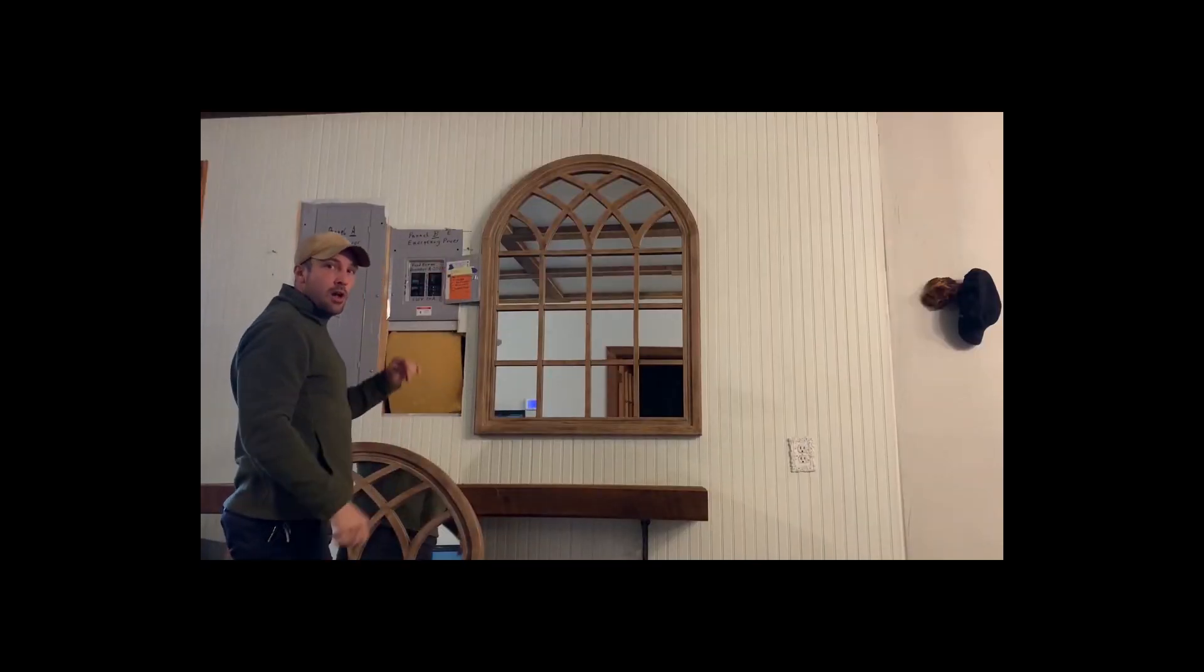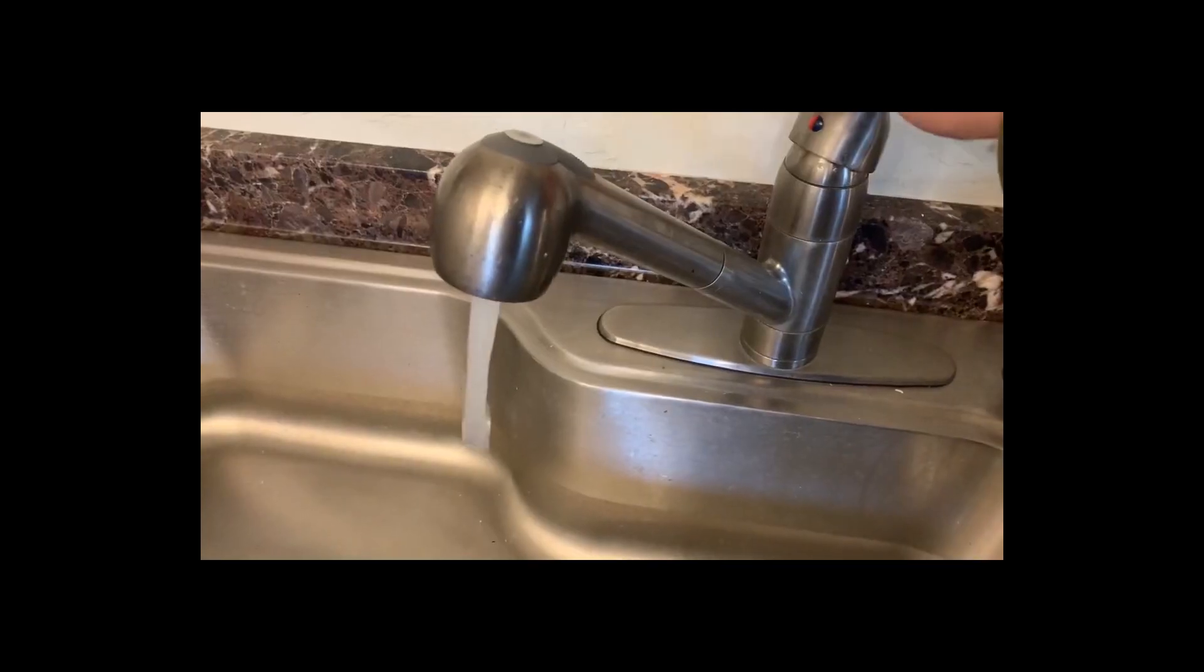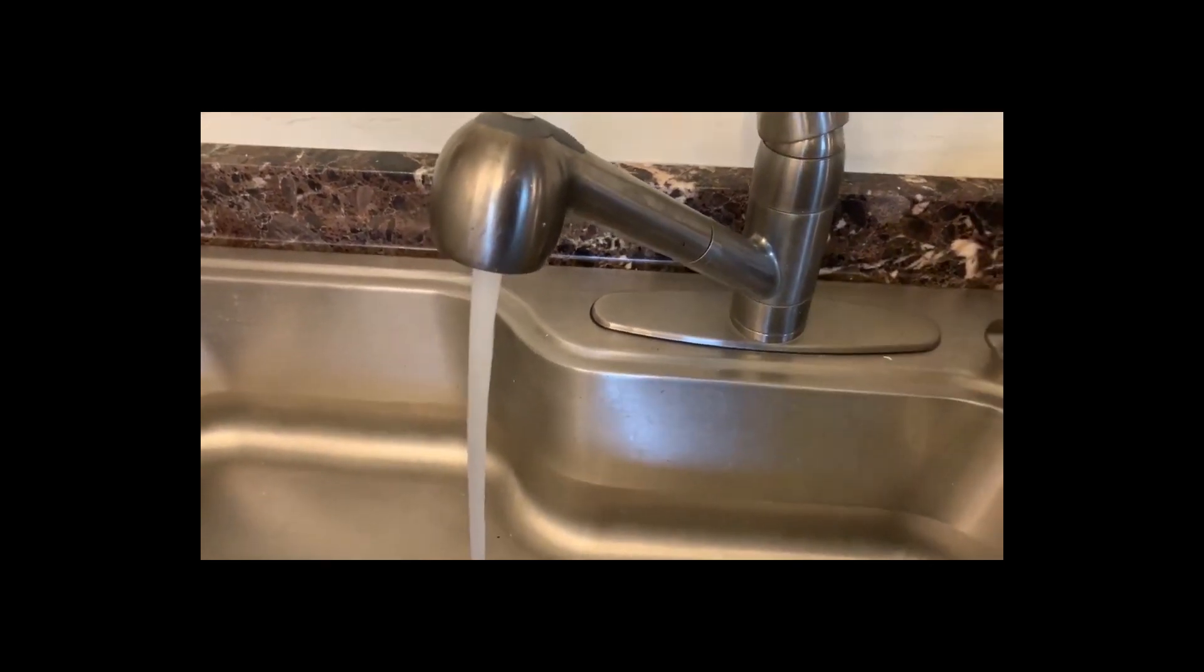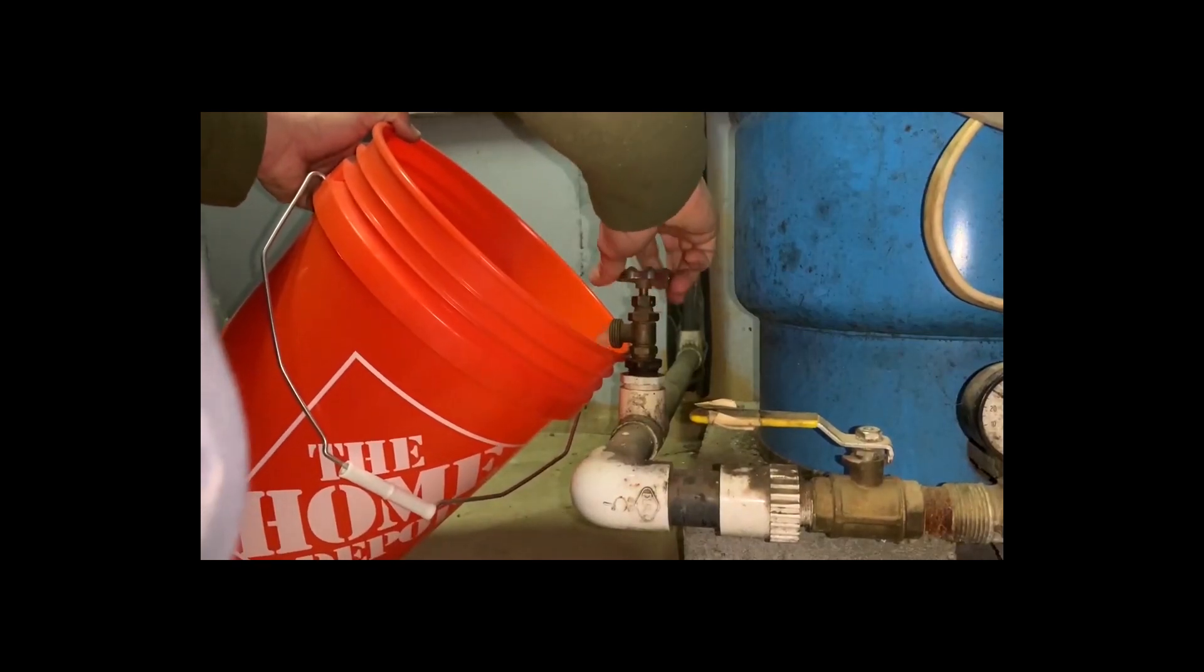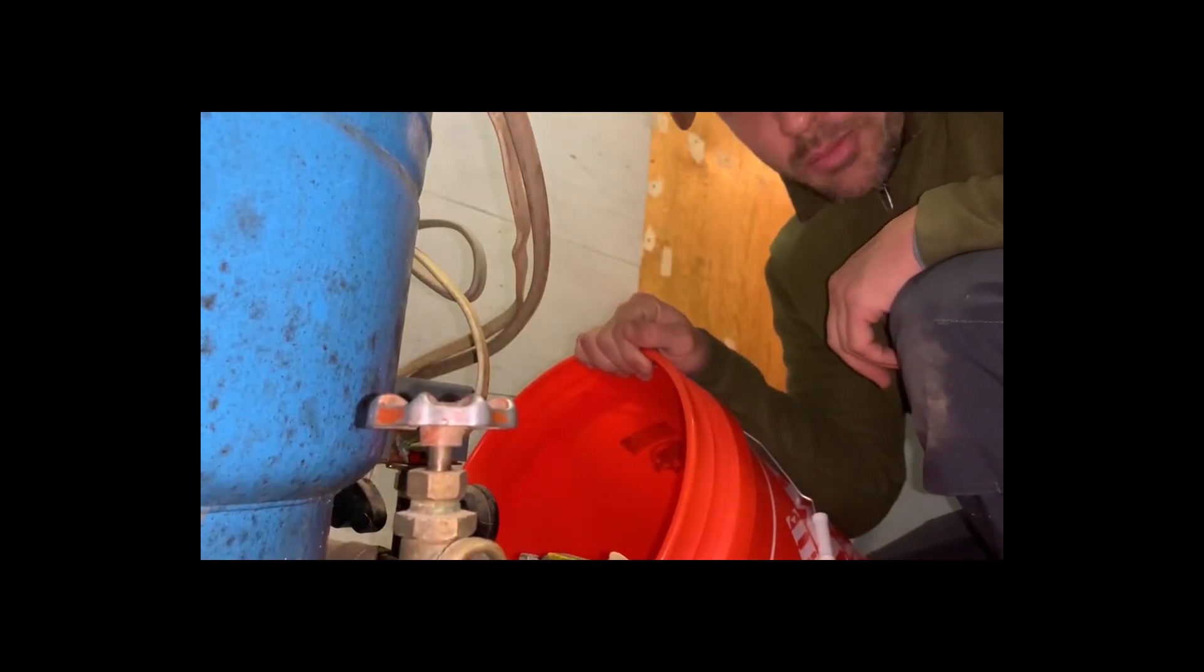So the first thing we've got to do is shut off power to the actual pump that's submerged in the bottom of that 300-foot well out there, drain the water from the lowest point in the house.